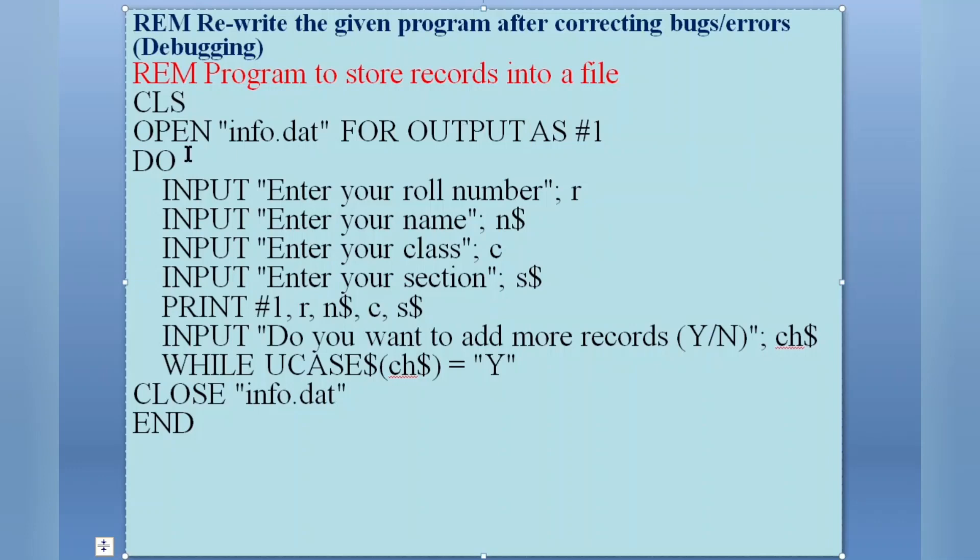This line is correct now. Then after that, DO, it is fine. INPUT enter the roll number, so roll number R - name, so we are using here numeric variable R. It will store the roll number. For name, we are using N$. This is for name - we need to use dollar symbol after the variable name because it contains alphabet or we can say character.